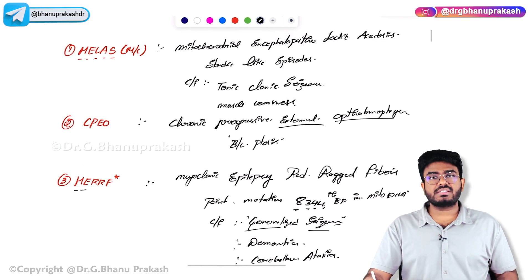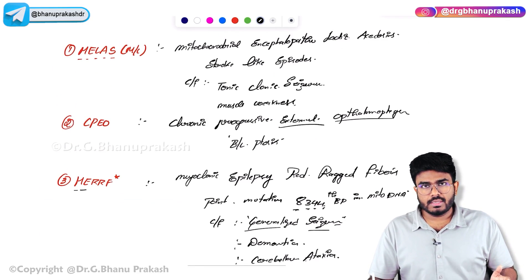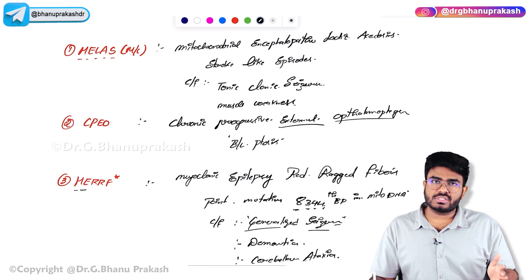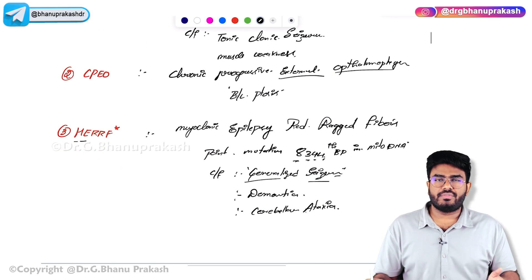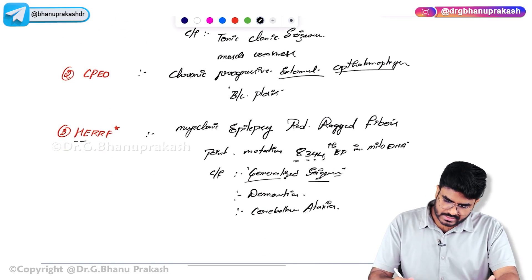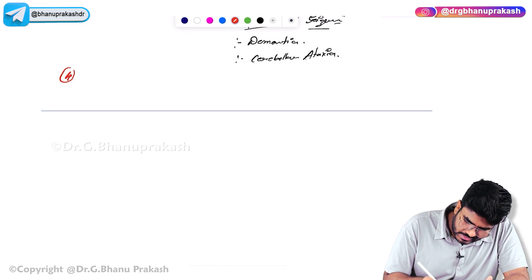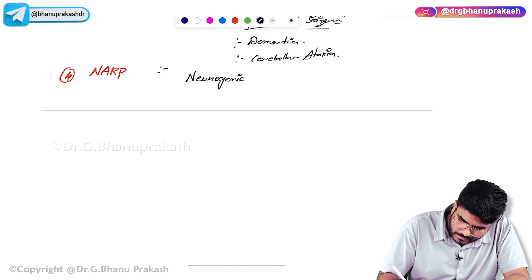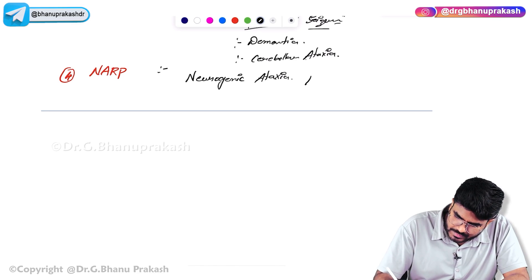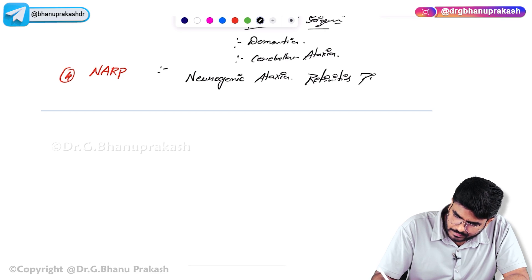To summarize so far: MELAS is the most common — mitochondrial encephalopathy, lactic acidosis, stroke-like episodes; CPEO — chronic progressive external ophthalmoplegia; MERRF — myoclonic epilepsy, red ragged fibers. The fourth mitochondrial disorder is NARP — Neurogenic Ataxia and Retinitis Pigmentosa.